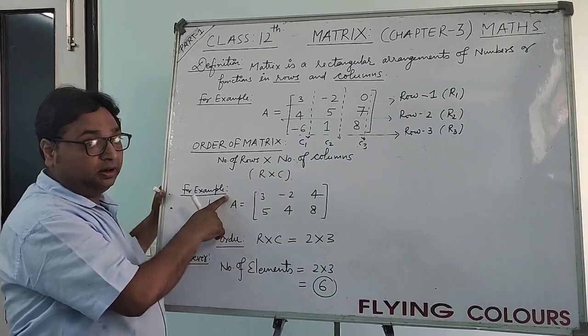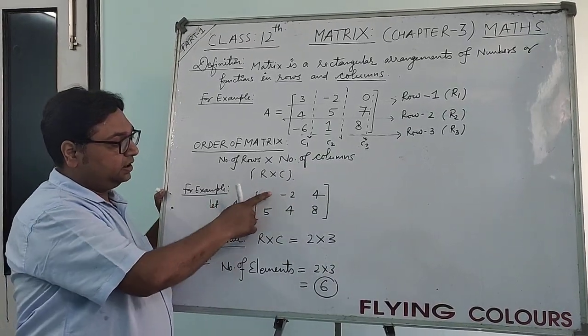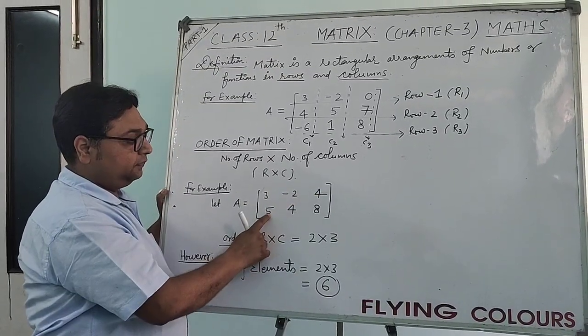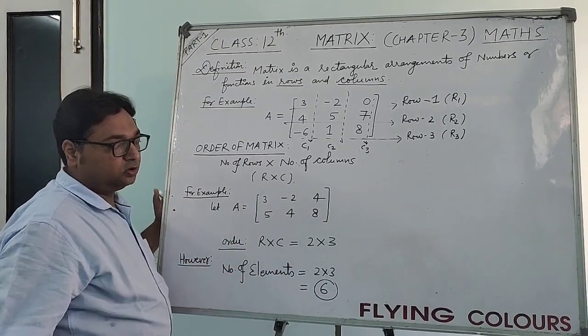So, let us take an example. For example, we have a matrix 3, minus 2, 4, 5, 4, 8.